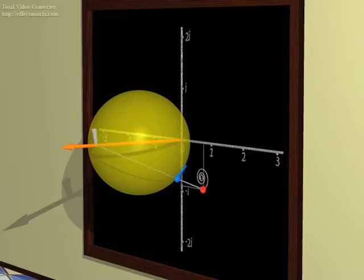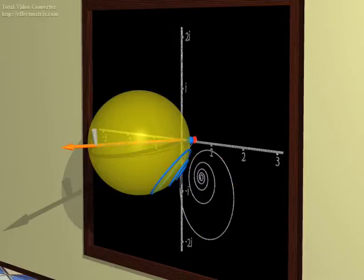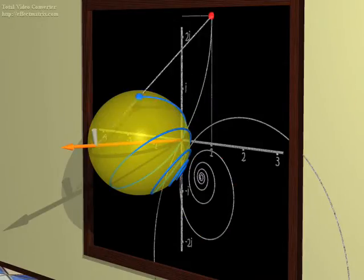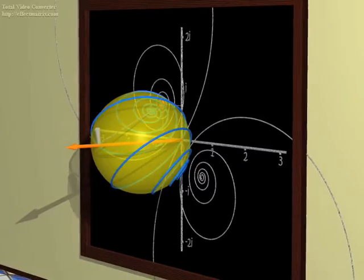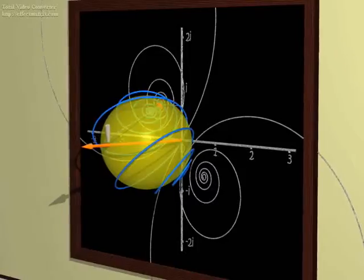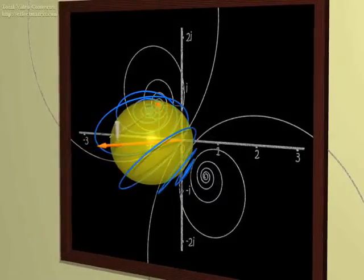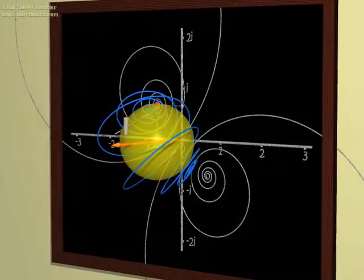Only the north pole of the sphere, I mean the pole from which I'm projecting, has no complex number associated to it. We say that it corresponds to infinity. Therefore, mathematicians say that the sphere is a complex projective line. Why line?